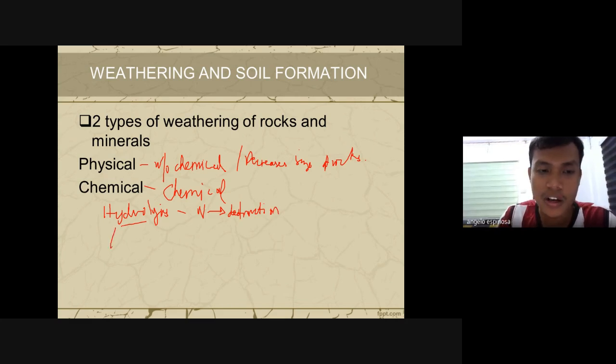R stands for relief or topography — referring to the slope or landscape of the land. It can be a steep slope, a flat lowland, or a flat slope. The slope determines how soil materials are transported and deposited.